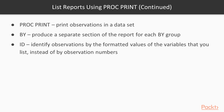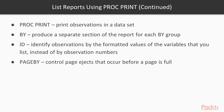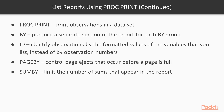The id statement identifies observations by the formatted values of the variables that you list, instead of by observation numbers. Page by controls page ejects that occur before a page is full — you specify page by and then the number where you want the page eject to occur. Sum by limits the number of sums that appear in the report — it controls how many sums we want to appear.